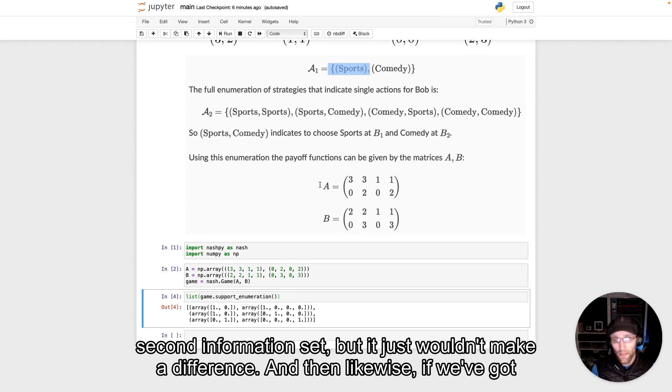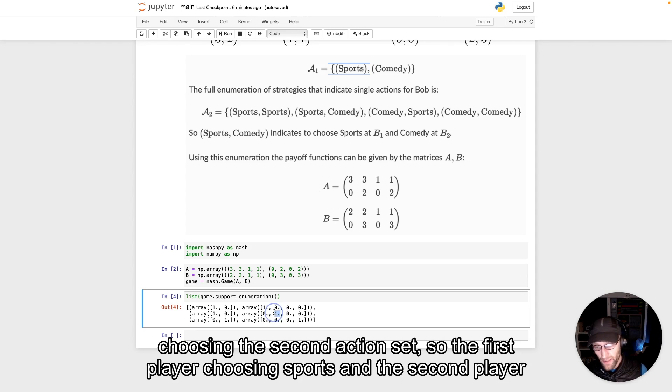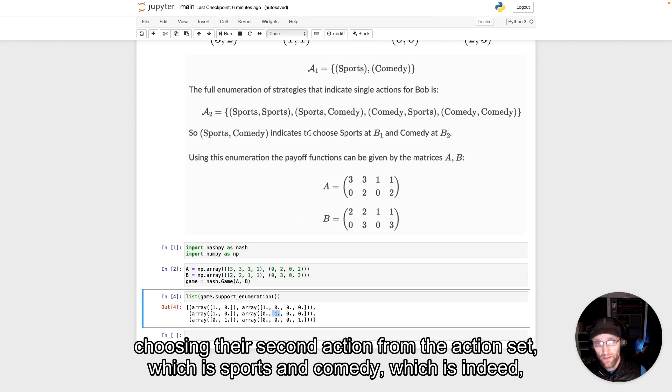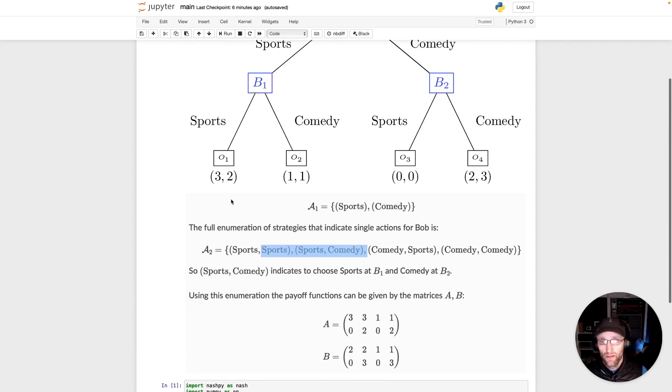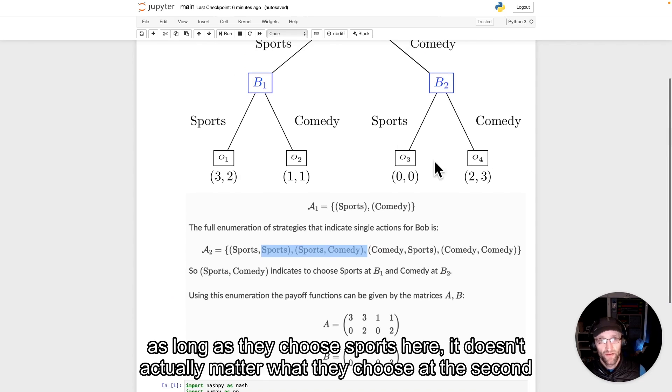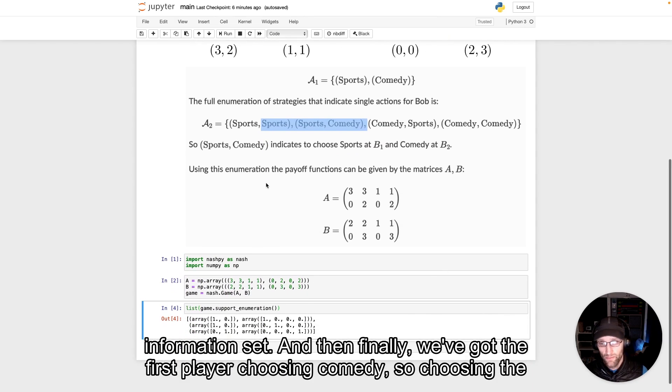And then likewise, if we've got choosing the second action set, so the first player choosing sports and the second player choosing their second action from the action set, which is sports and comedy, which indeed, as long as they choose sports here, it doesn't actually matter what they choose at the second information set.